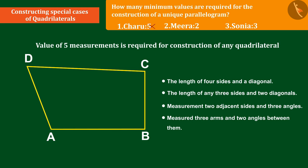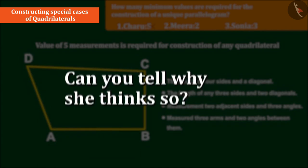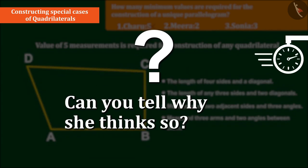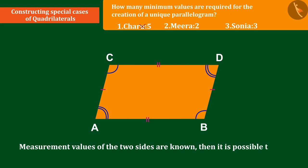Meera thinks that option 2 is the correct answer. Can you tell why she thinks so? Absolutely right. Meera knows that the measurement values of the opposite sides and angles of the parallelogram are equal and she thinks that if the measurement values of the two sides are known, then it is possible to construct a parallelogram.